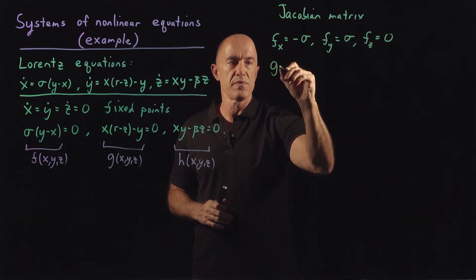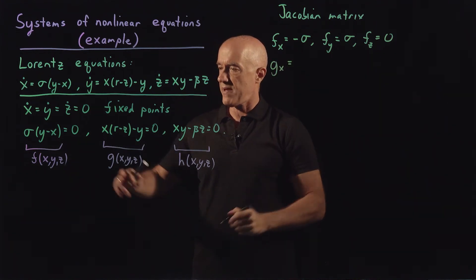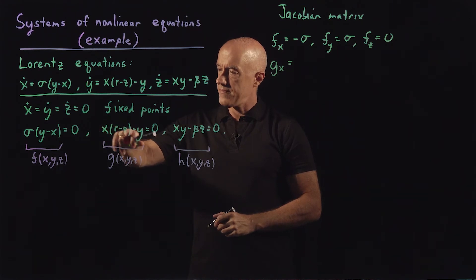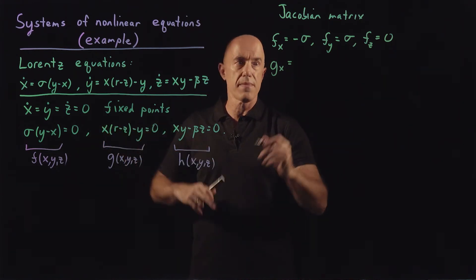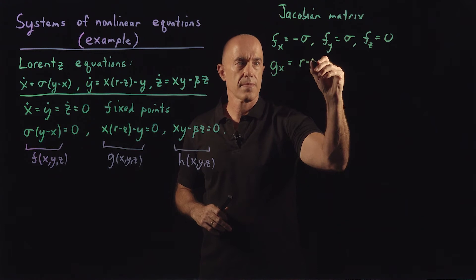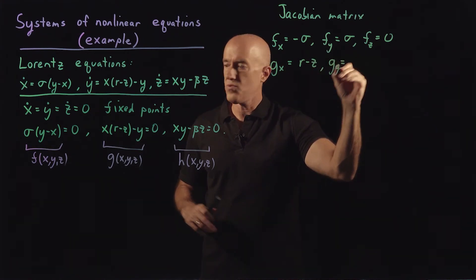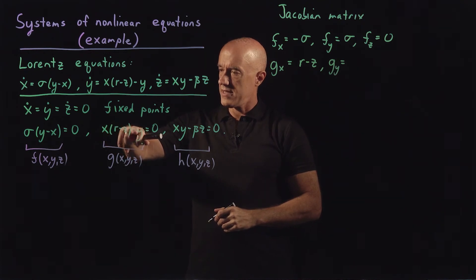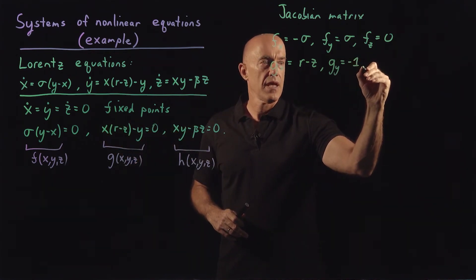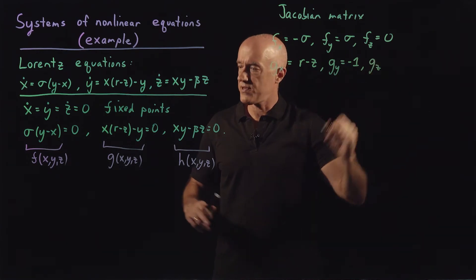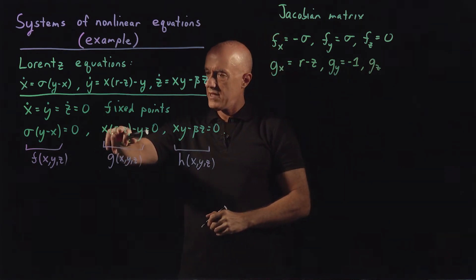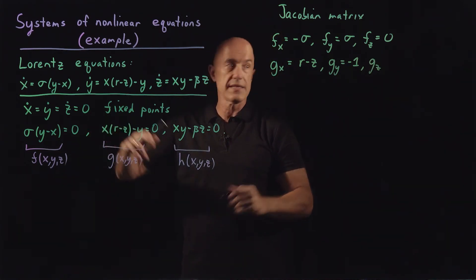The second row will be the partial of g with respect to x. That will be r minus z. The partial of g with respect to y is negative 1. And the partial of g with respect to z is going to be minus x.